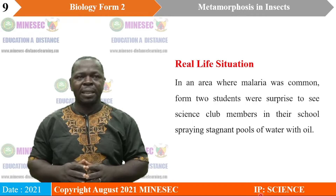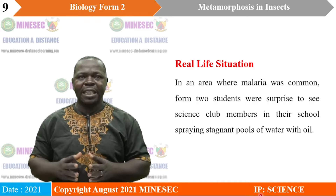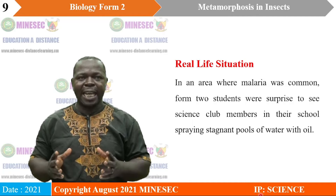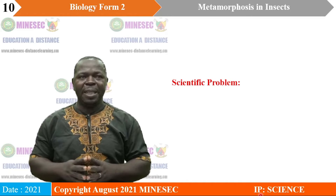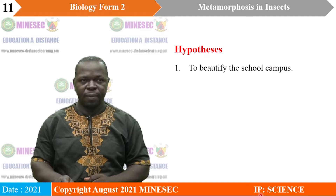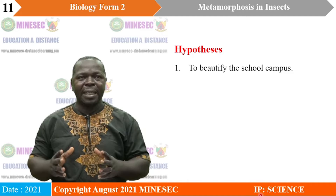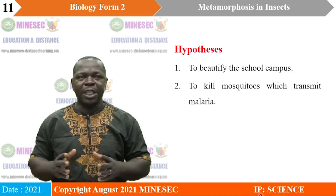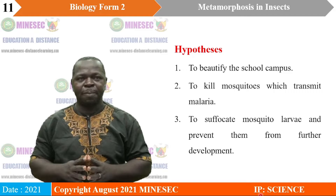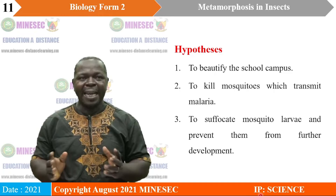In an area where malaria was common, two students were surprised to see science club members in their school spraying stagnant pools of water with oil. What is the scientific problem in the above real-life situation? Why could these members of the science club spray stagnant pools of water with oil? That leads us into our hypotheses. The first hypothesis is to beautify the school campus. The second is to kill mosquitoes which transmit malaria. And the last hypothesis is to suffocate mosquito larvae and prevent them from further development. By the end of this lesson we are going to see which of these hypotheses is accepted.